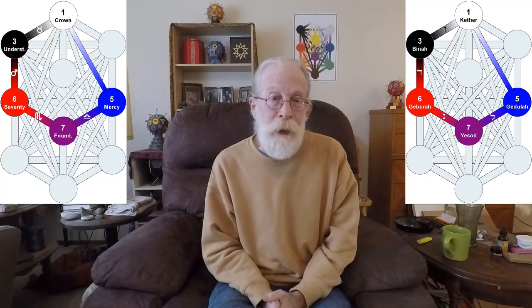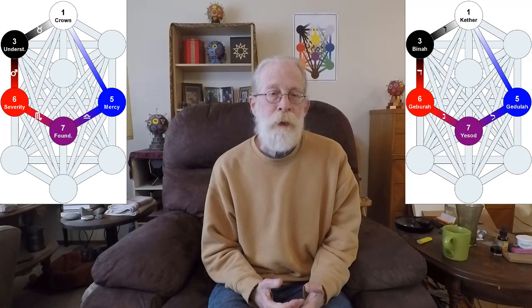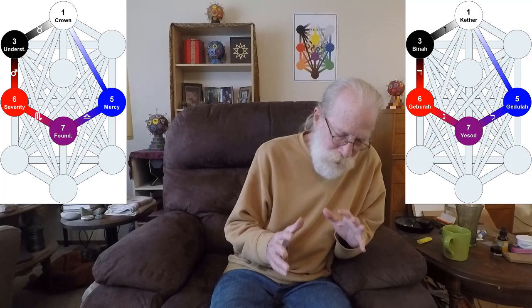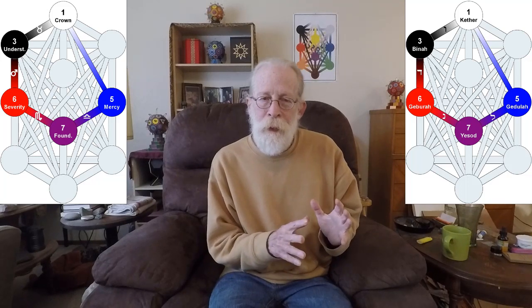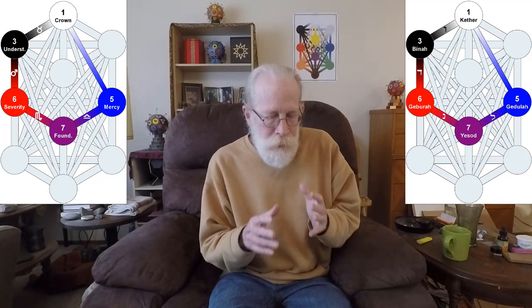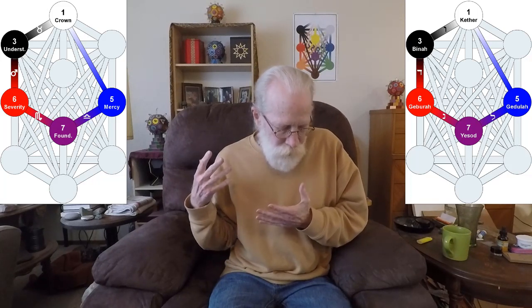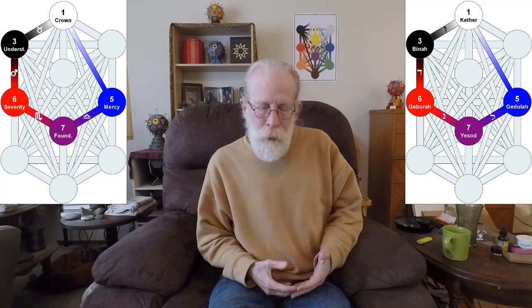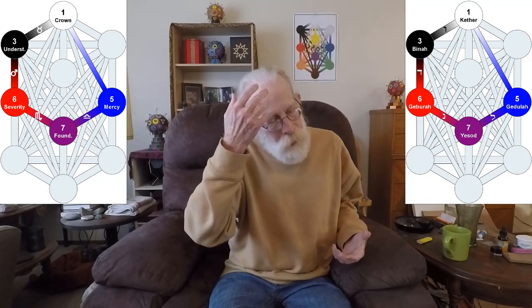And the fifth gate is another pentangular gate. And it is sort of the opposite of gate 51, the second gate, the pentangle there. So in this case, we're going from Gebura to Yesod to Gedjula, directly up to Kether.